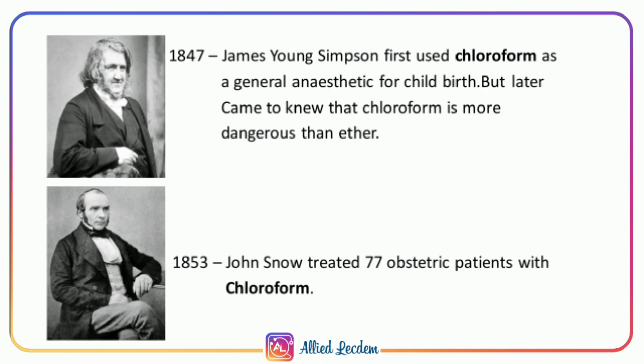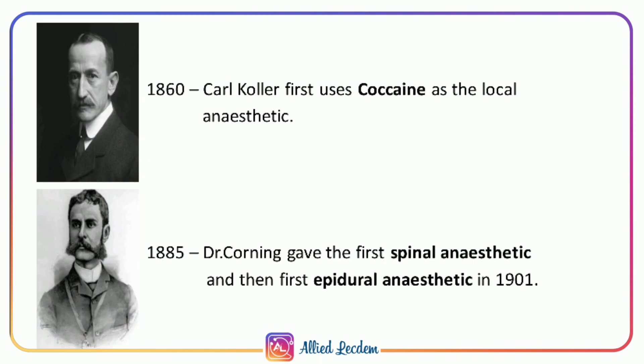John Snow, in 1853, was an English physician and leader in the development of anesthesia and medical hygiene. He was the first physician to study and calculate the dosage for the use of ether and chloroform as a surgical anesthetic. Carl Kohler, in 1860, was an ophthalmologist who introduced cocaine as a local anesthesia for eye surgery.